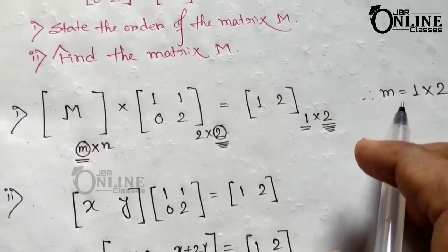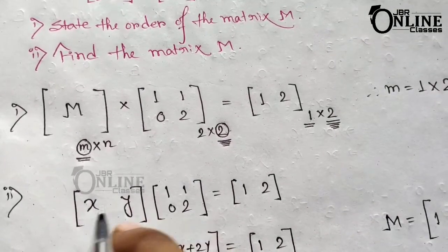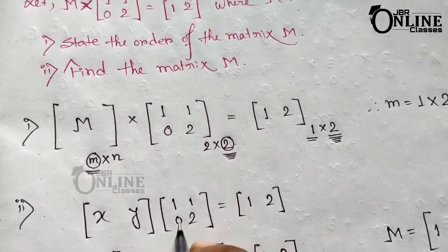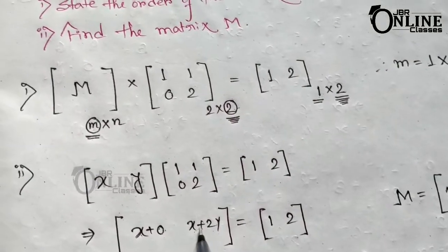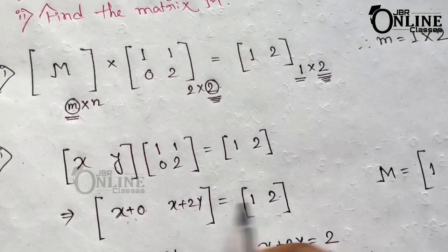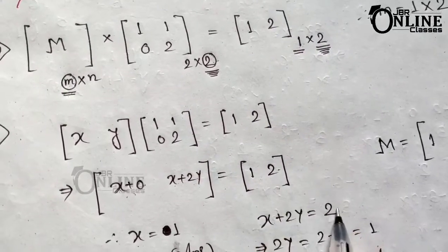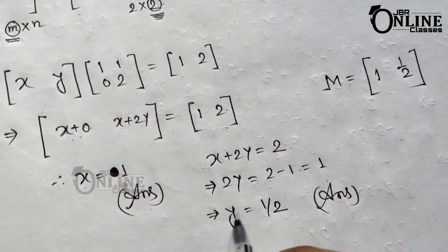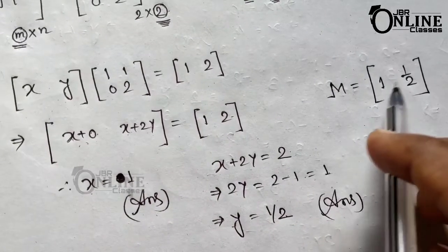For part two, find the matrix M. Since the order of M is 1-by-2, let M equal [x, y]. Then [x, y] times [1, 1; 0, 2] equals [1, 2]. Multiplying gives x plus 0 and x plus 2y, so [x, x+2y] equals [1, 2]. Comparing: x = 1, and x + 2y = 2, so 2y = 1, giving y = 1/2. Therefore M = [1, 1/2].